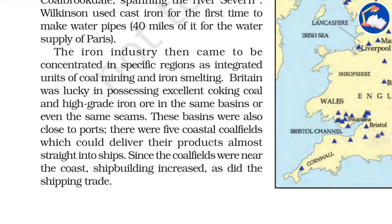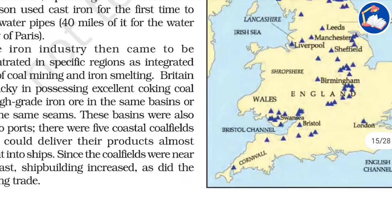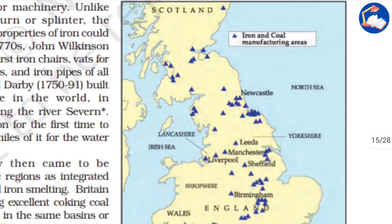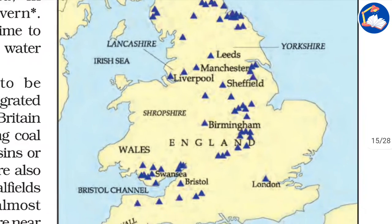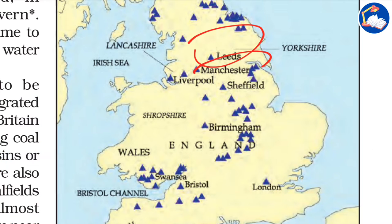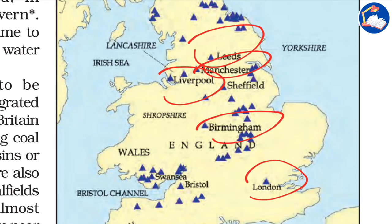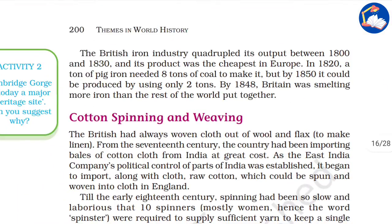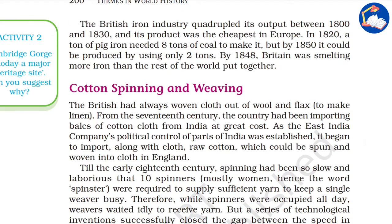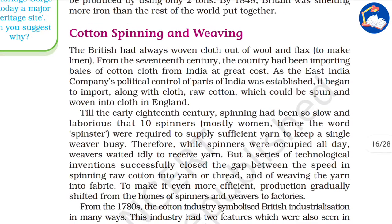The iron industry came to be concentrated in specific regions as integrated units near coal mining areas for ease of access. This is a map showing iron and coal manufacturing areas in Britain. Major areas include Leeds, Manchester, Birmingham, London, and Liverpool — all major cities in England which had a foundation in iron and coal industry.